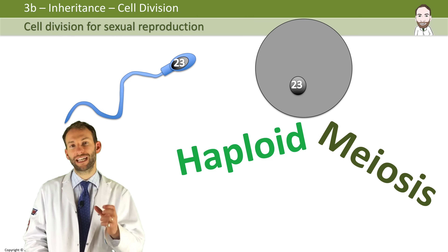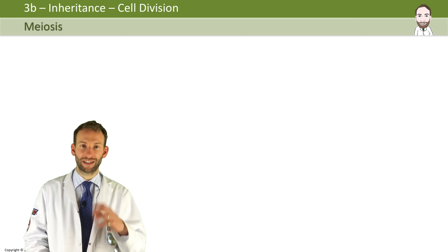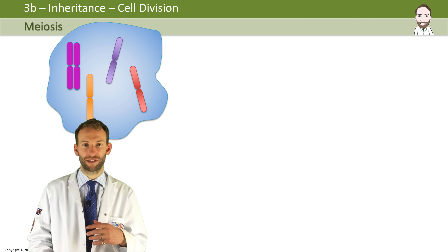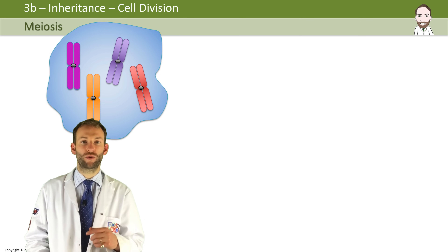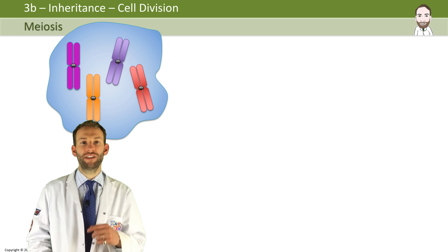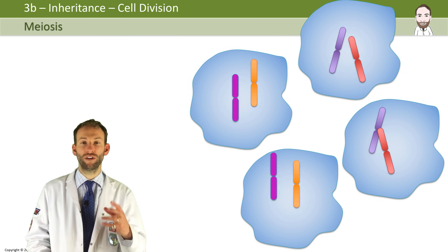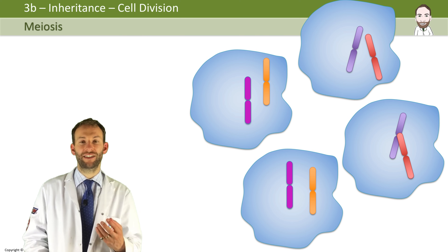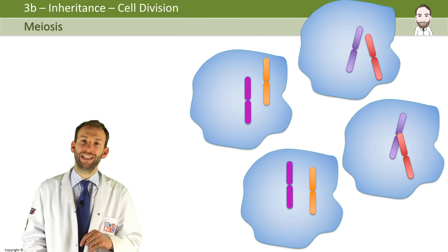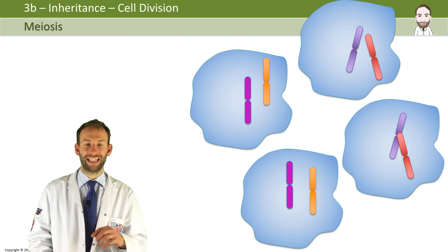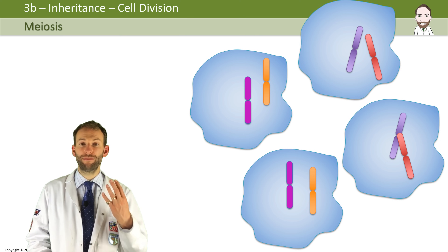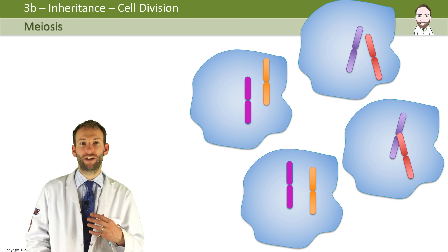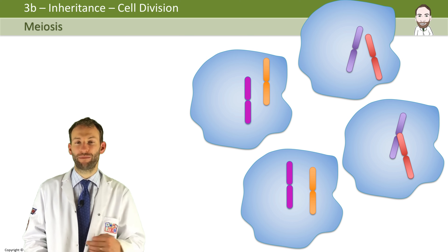Let's start with a cell with four chromosomes. We copy all the DNA to make double chromosomes, just like before. But the difference is that the cell divides twice — it divides once, and then it divides again. You end up with only two chromosomes in each cell — we've halved the number, going from four to two. So we've made four haploid cells instead of two diploid cells. That's the difference between mitosis and meiosis.